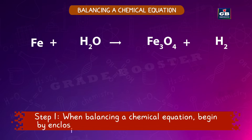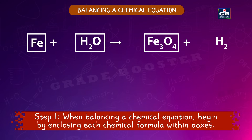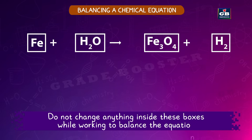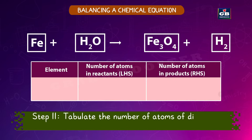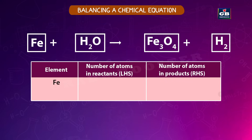Step one: enclose each chemical formula within boxes and do not change anything inside these boxes while balancing. Step two: tabulate the number of atoms of different elements. Iron: reactants 1, products 3. Hydrogen: reactants 2, products 2. Oxygen: reactants 1, products 4.